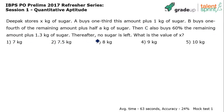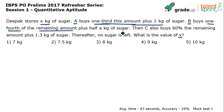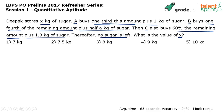Deepak has x kg of sugar. Person A buys one-third of this amount plus 1 kg. Then person B buys one-fourth of the remaining amount plus half a kg. Then person C buys 60% of the remaining amount plus 1.3 kg, after which no sugar is left. The options are 7, 7.5, 8, 9, or 10. What is the value of x?